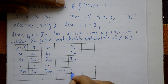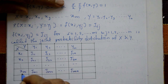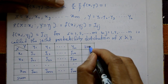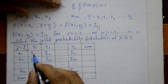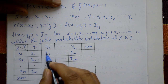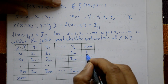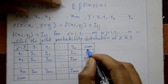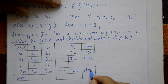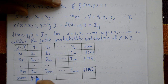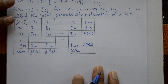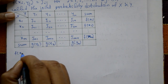Now, adding row-wise: J11 + J12 + J13 + ... + J1N gives f(X1) for the first row, f(X2) for the second row, and so on up to f(XM). Adding column-wise: J11 + J21 + ... + JM1 gives g(Y1), and g(Y2), and so on up to g(YN).